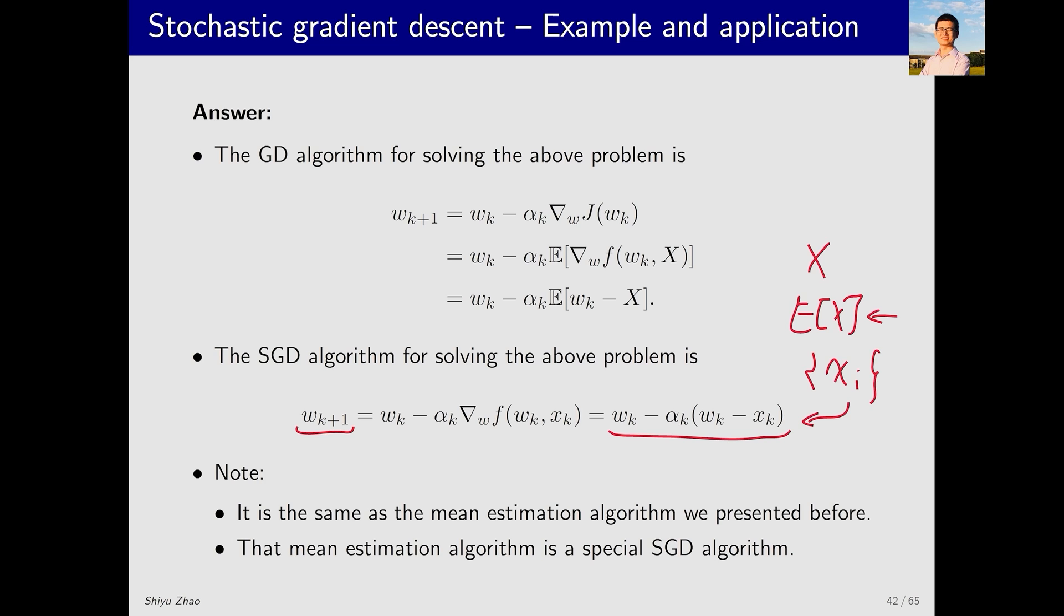At the beginning of this lecture, we also mentioned that if alpha_k was equal to 1 over k, then w_k was indeed the exact average of the first k x_i. But we didn't introduce what happens when alpha_k is not 1 over k. Now we understand that this algorithm can still work even if alpha_k is not 1 over k because it is actually a special SGD algorithm. The problem description is different. Before it was about finding x. Now it is described as an optimization problem, but they are fundamentally the same.